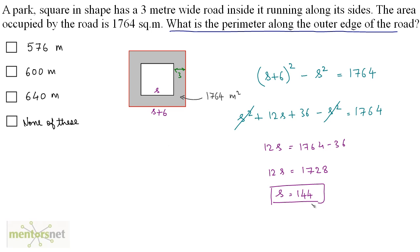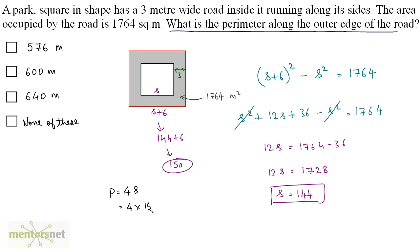So 144 is the side of the inner square. The side of the outer square will be 144 + 6 = 150. The perimeter of the outer square is 4 times the side, so 4 × 150 = 600 meters. So we have the answer as option B.